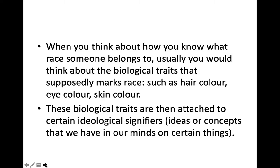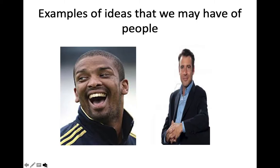When you think about how you know what race someone belongs to, usually you would think about the biological traits that supposedly mark race, such as hair color, eye color, skin color. These biological traits are then attached to certain ideological signifiers — ideas or concepts that we have in our minds on certain things. Examples of ideas that we may have of people — we will discuss this later in class.